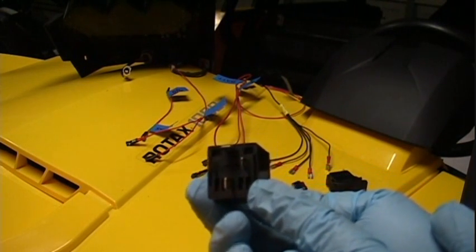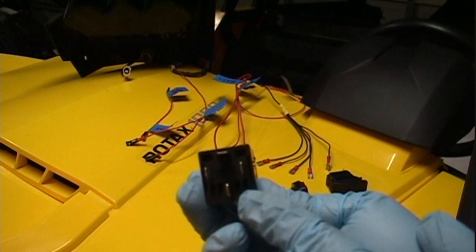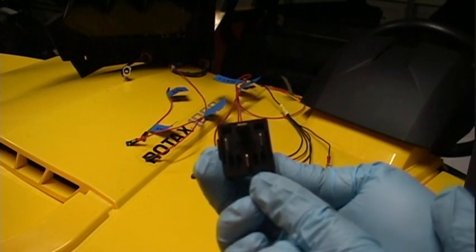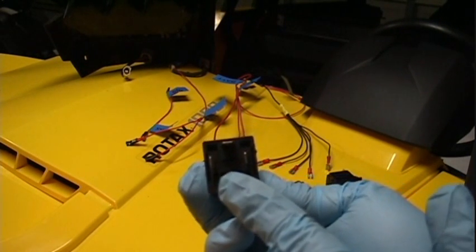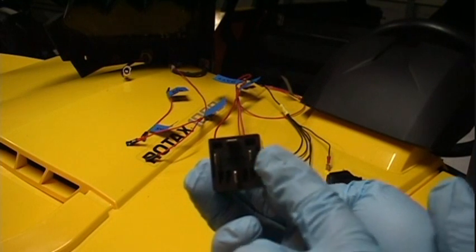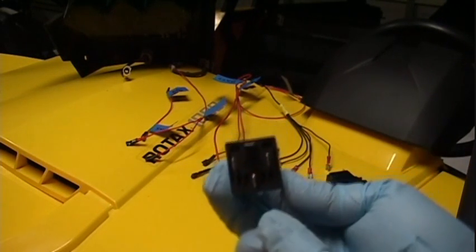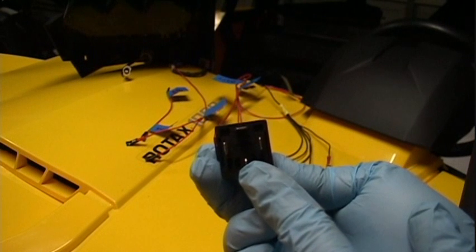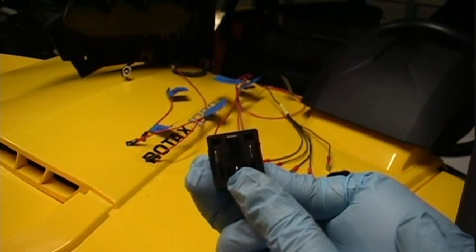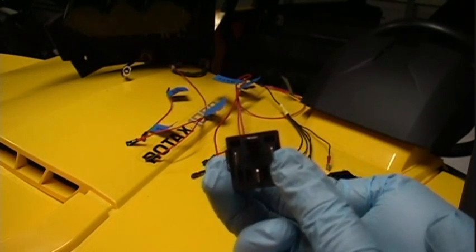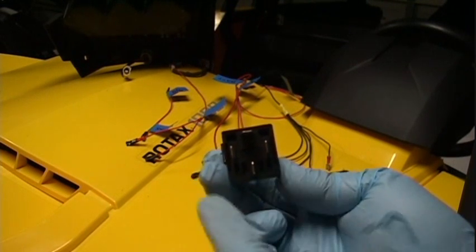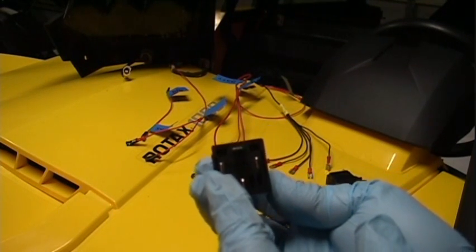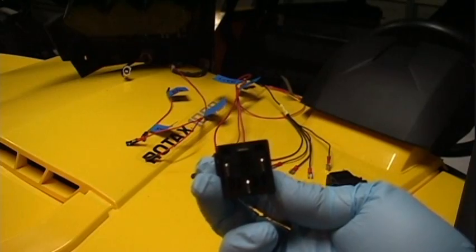The numbers are not visible on the camera here, but typically you'll find on these relays that the bottom blade, when you hold it in this position with the three blades going this way and the one horizontal blade up at the top, is the number 30 blade. The right hand side blade will be the 85, the left hand side blade will be the 86, and the top blade will be the 87.